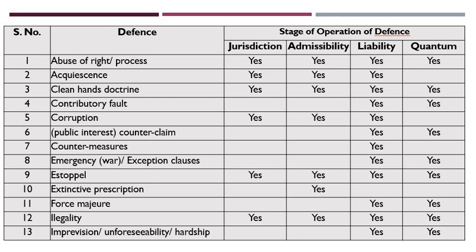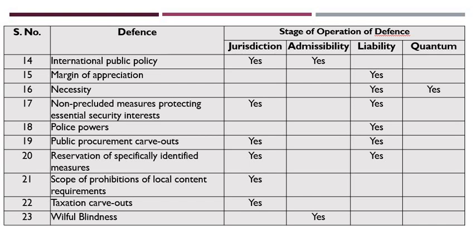Some defenses such as the Clean Hands Doctrine, Estoppel, and Illegality could be deployed in all four stages. We will discuss certain defenses in this lecture. We have already discussed international public policy as a defense in the previous lecture. The link to the last lecture is also provided in the description to this video.